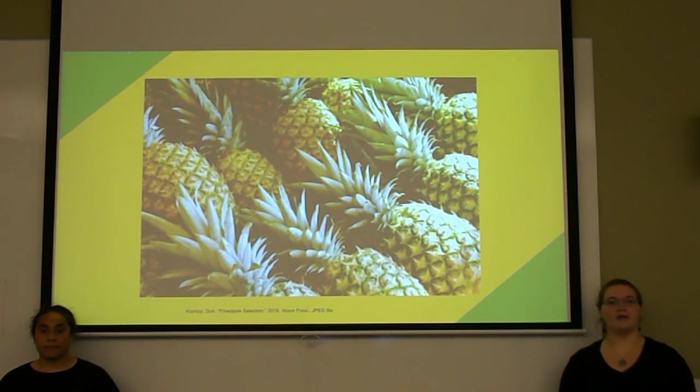Stem bromelain's systematic name, or its enzyme classification, is EC 3.4.22.32. The first number in this sequence refers to the class number. It is a hydrolase, which cleaves bonds by the introduction of water. However, stem bromelain is more easily identified by 2Bi6.